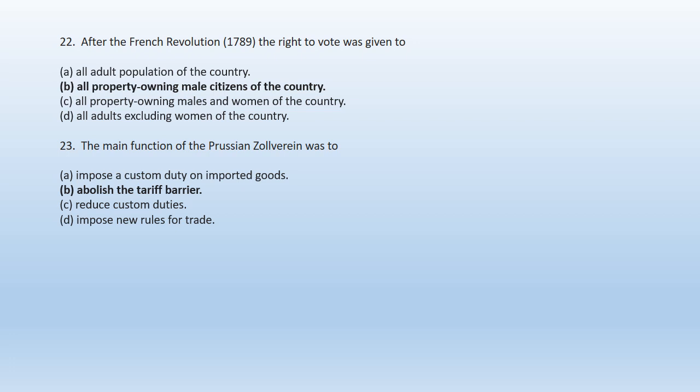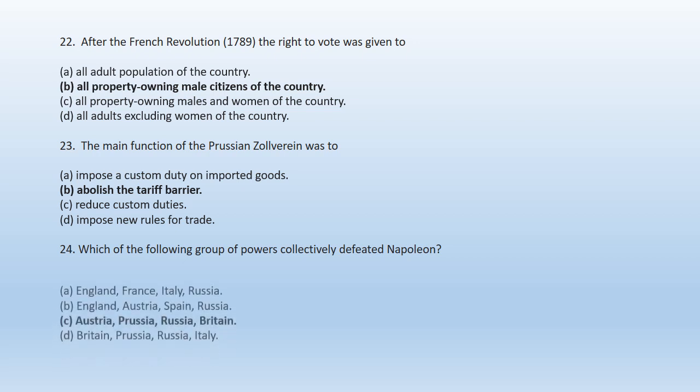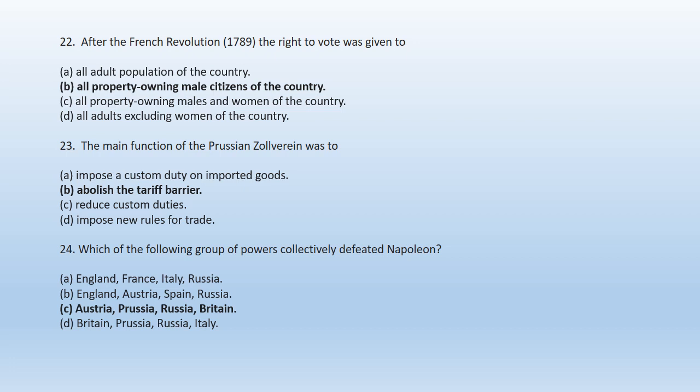Question 24: Which of the following groups of powers collectively defeated Napoleon? A. England, France, Italy, Russia; B. England, Austria, Spain, Russia; C. Austria, Prussia, Russia, Britain; D. Britain, Prussia, Russia, Italy. Option C — Austria, Prussia, Russia, and Britain — is the group which collectively defeated Napoleon. Question 25: Which of the following countries is considered as the cradle of civilization? A. England, B. France, C. Greece, D. Russia. Option C — Greece is the right answer. Greece is considered as the cradle of civilization.